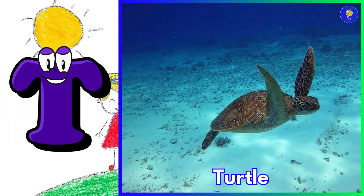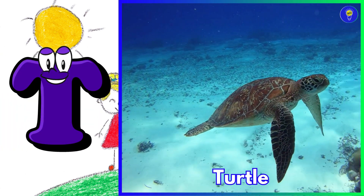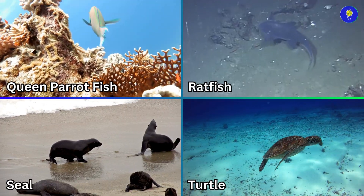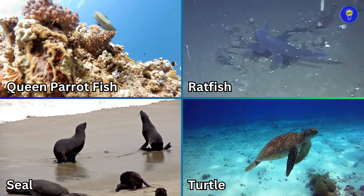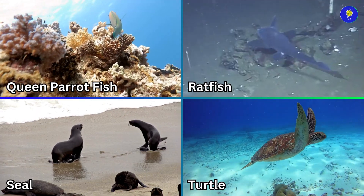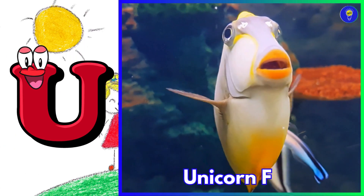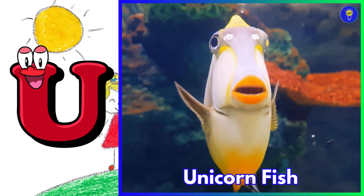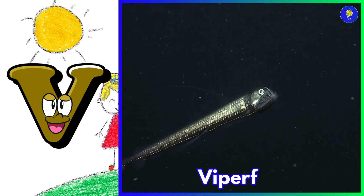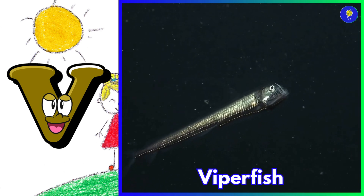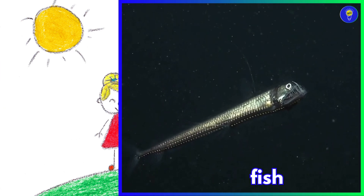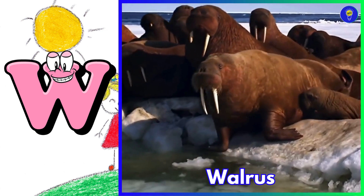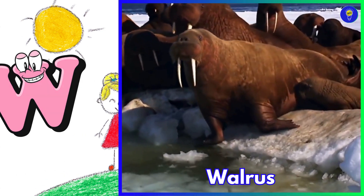T is for turtle. U is for unicorn fish. V is for viperfish. W is for walrus.